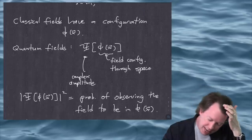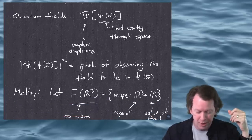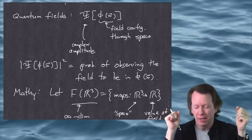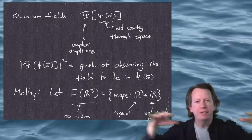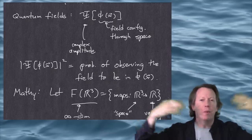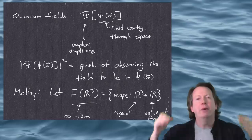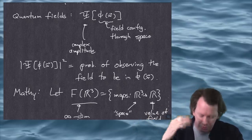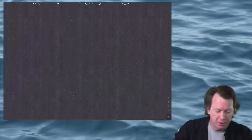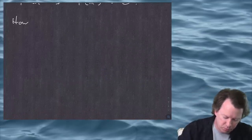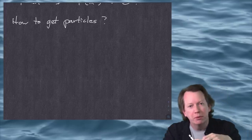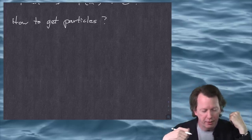This might seem a little complicated, but what might be worrying you is: we take this field, which is already not very particle-like, and then we make a wave function of it, which is also not particle-like. How are we supposed to say that this represents our universe, which seems to be full of particles when we observe them? That's going to be the tricky part — how do we get particles out of this?